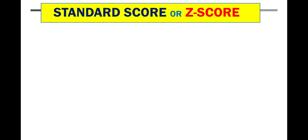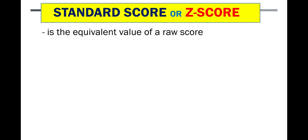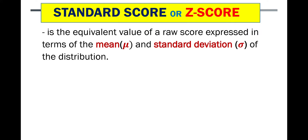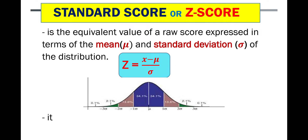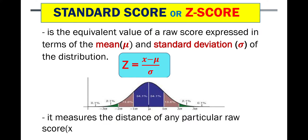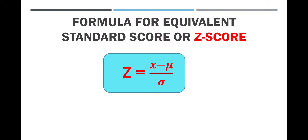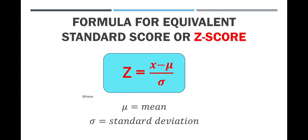The standard score, or z-score, is the equivalent value of a raw score expressed in terms of the mean and standard deviation of the distribution. It measures the distance of any particular raw score from the mean in standard deviation units. The formula for the equivalent standard score or z-score is: z is equal to raw score minus mean, divided by standard deviation.